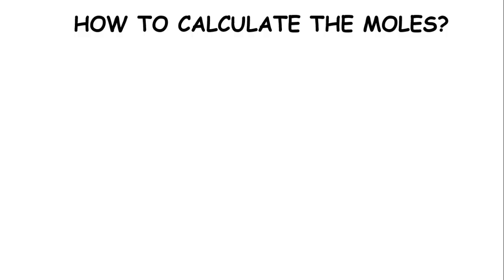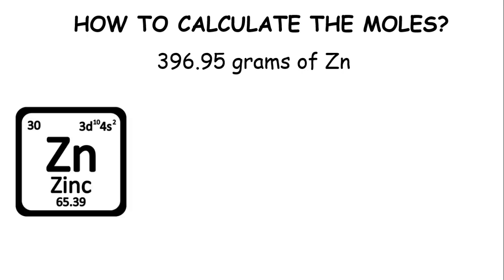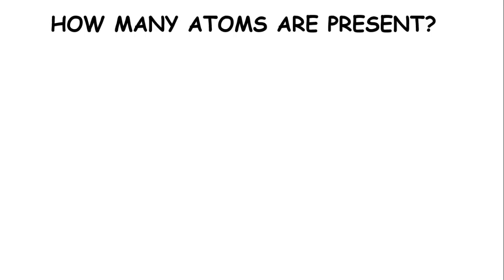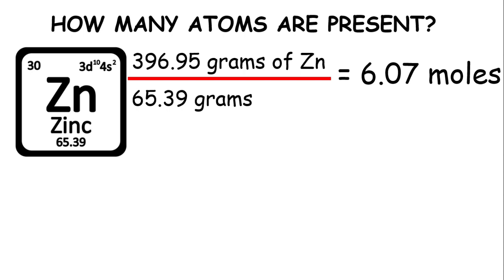How do we calculate the moles? Let's have, for example, 396.95 grams of zinc. Again, check the periodic table, get the molar mass, then we divide the given with the molar mass. So 396.95 grams divided by 65.39 grams, this will give us 6.07 moles of zinc.